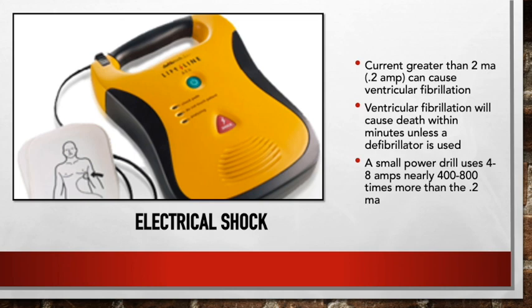When shock happens, a defibrillator is typically needed to reset the heart at the correct voltage. Anything greater than 2 amps can cause ventricular fibrillation — it can cause death within a couple minutes unless the heart is reset. A small power drill, for example, uses 4 to 8 amps, which is nearly 400 to 800 times more than what's required to cause ventricular fibrillation. These tools are used every day, but safety measures have been created to prevent injuries.